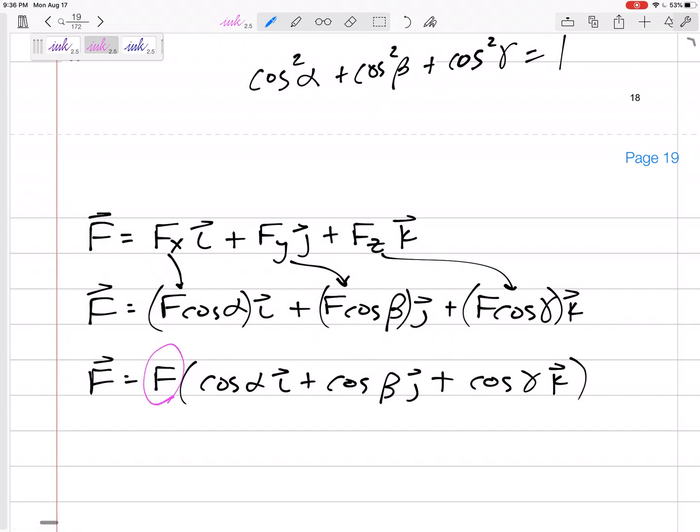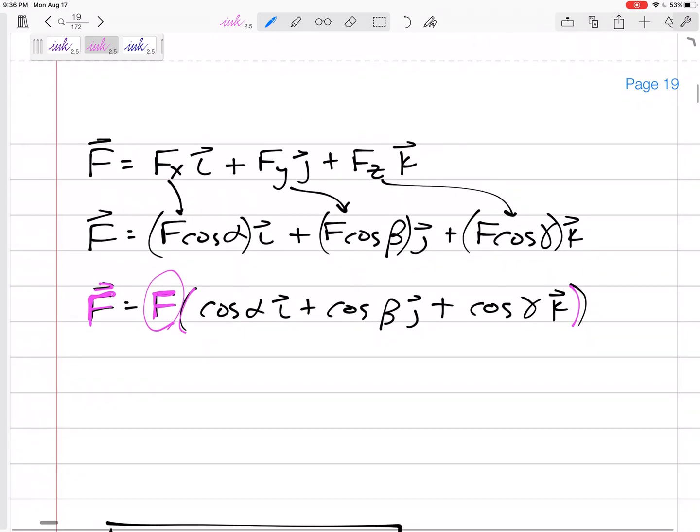If we factor out this F, then we've got that the force as a vector is equal to the magnitude times this right here - this cosine alpha in the i plus cosine beta in the j plus cosine gamma in the k. And that is really just the direction vector. This right here is really the direction vector. This is a unit vector, so we can call it u.